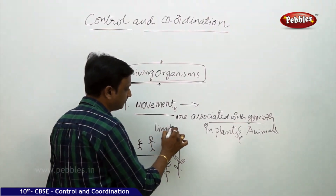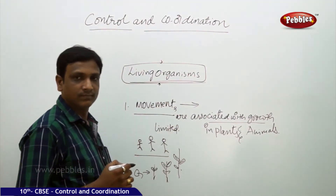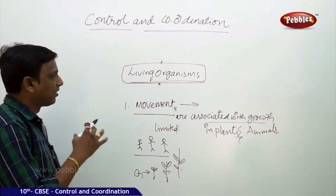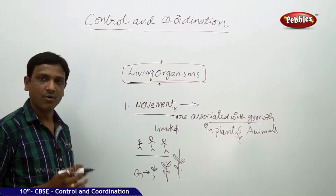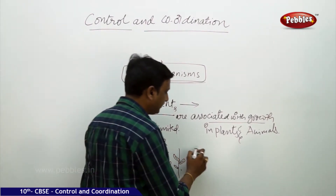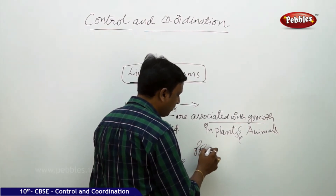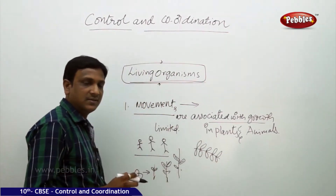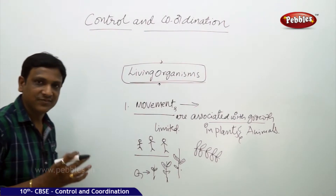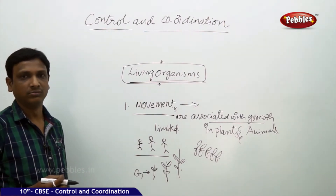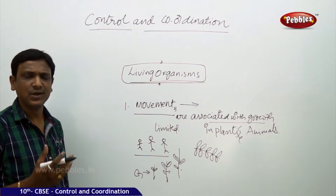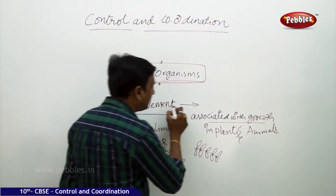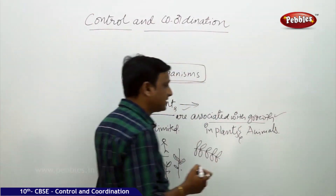We cannot conclude that movements are always associated with growth. For example, if you see a touch-me-not plant — Mimosa pudica — if you touch the leaves of this plant, the leaves droop and close down. Here there is no growth associated with this movement in the plant.